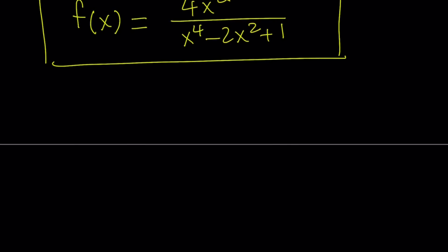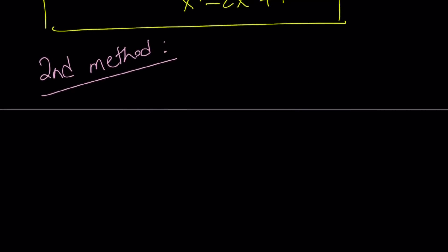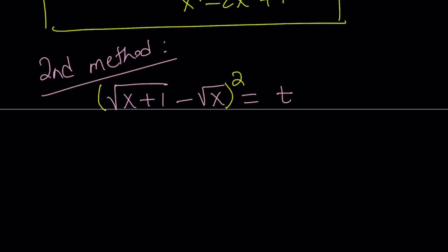The second method is very similar but differs in how we solve the equation. We again set square root of x plus 1 minus square root of x equal to t. But instead of putting the radicals on different sides, I'm just going to square both sides directly right away.